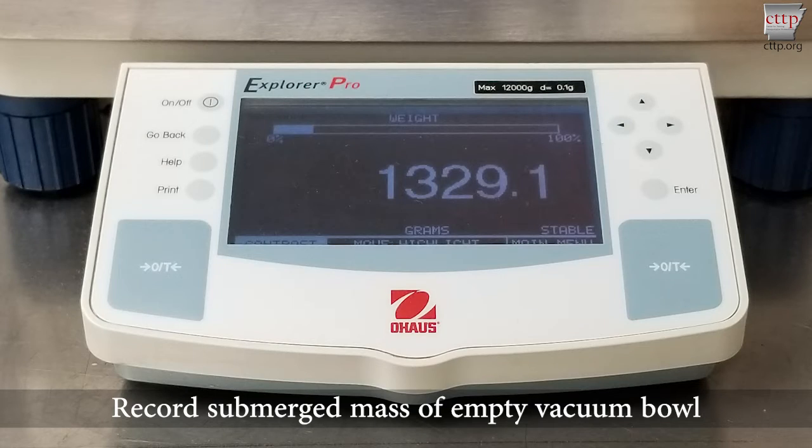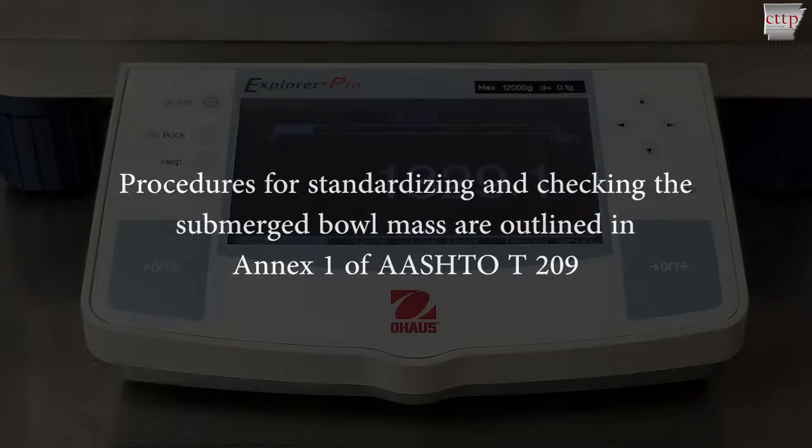If this value is within plus or minus 0.3 grams of the standardized mass, use the standardized mass for calculations. Procedures for obtaining the standardized mass and checking the submerged bowl mass are outlined in Annex 1 of AASHTO T209.